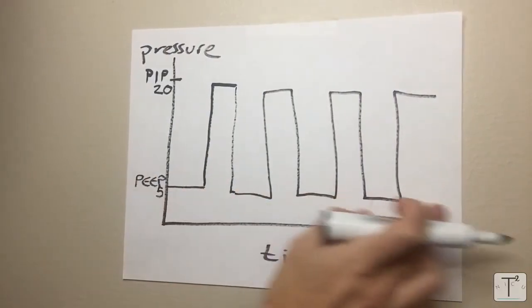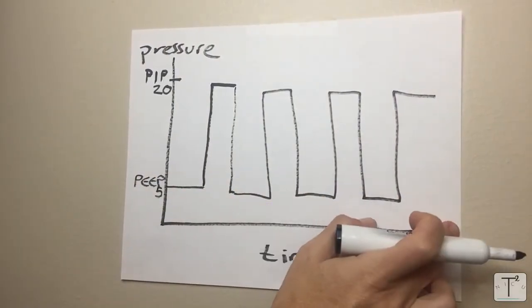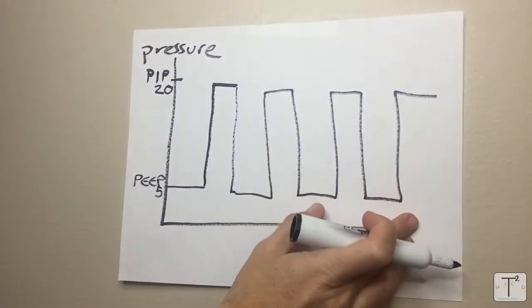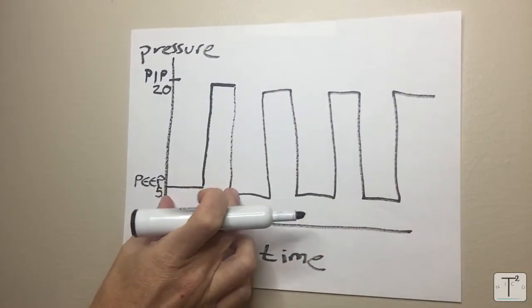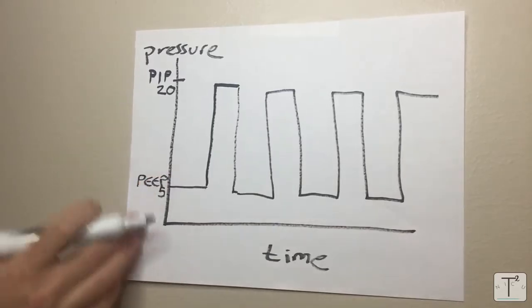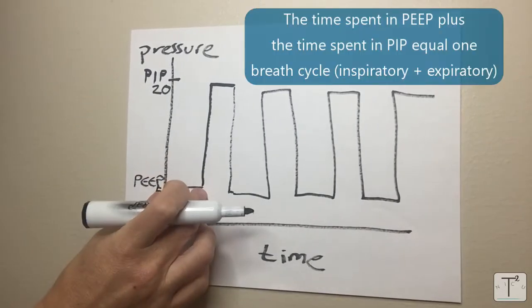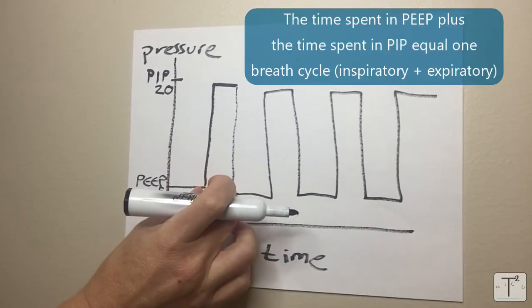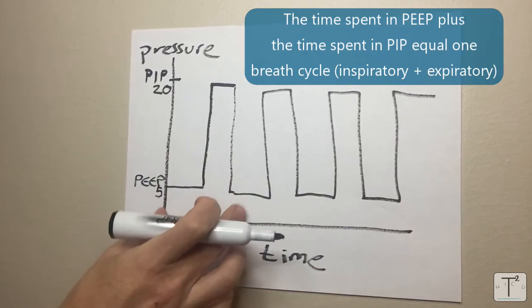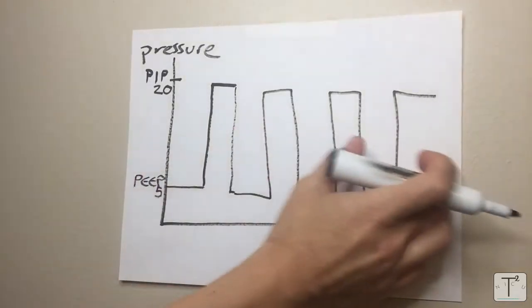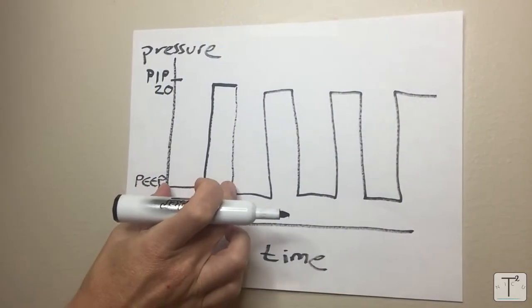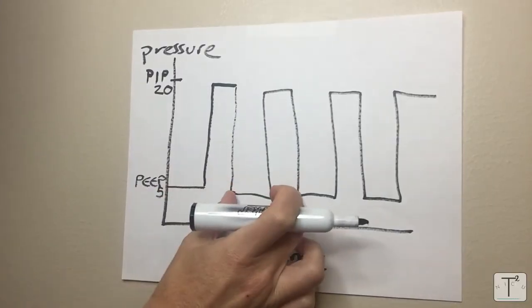If the rate that you set on the machine is 30 then 60 divided by 30 is 2 so each breath will last for two seconds. That would be the time spent in PEEP plus the time spent in PIP would equal a total of two seconds. If you set the rate at 60 then obviously each full breath would only be one second.